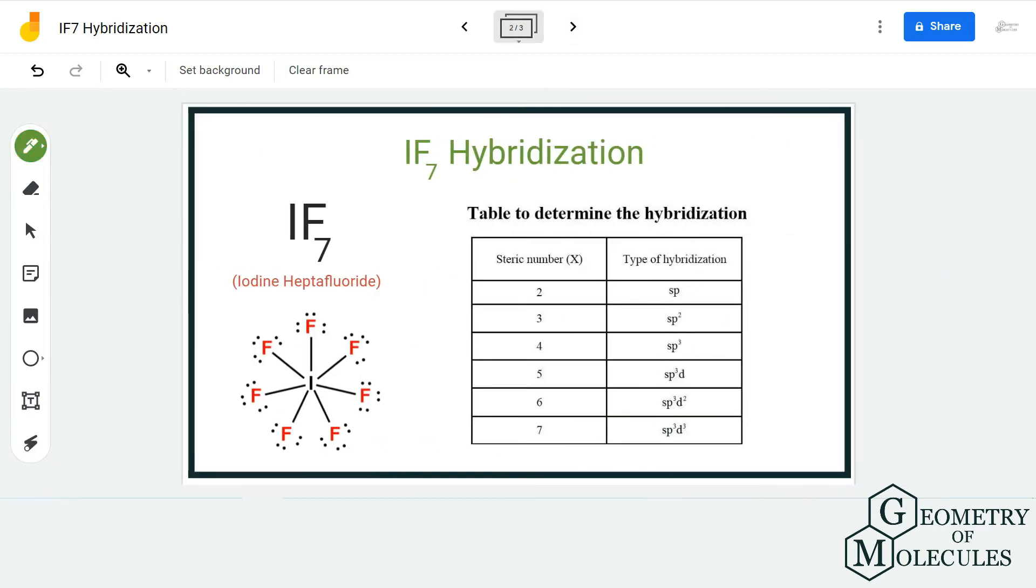If you look at this table, the steric number seven corresponds to SP3D3 hybridization. Whenever there are seven bonding pairs around the iodine atom, it needs to form seven hybrid orbitals.